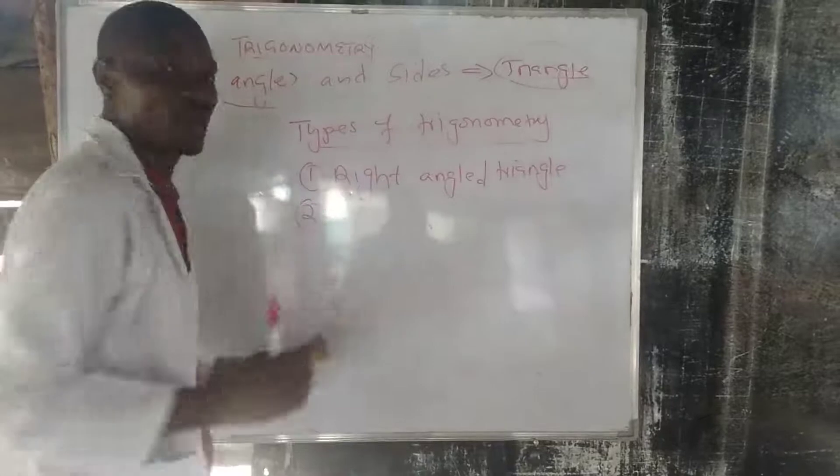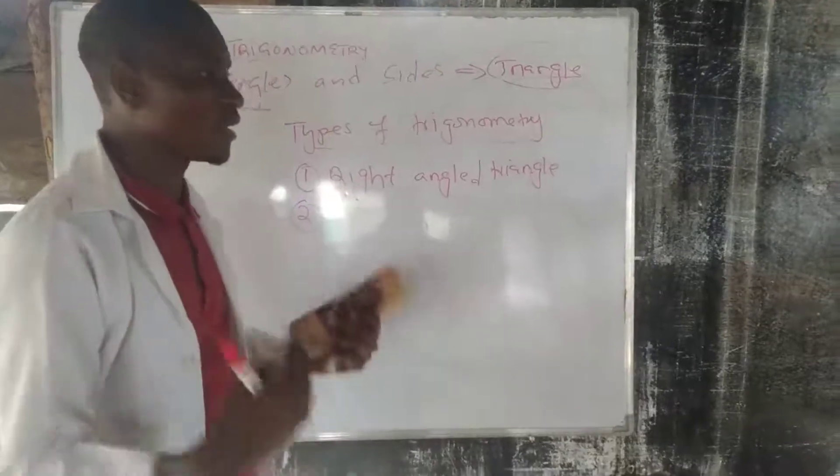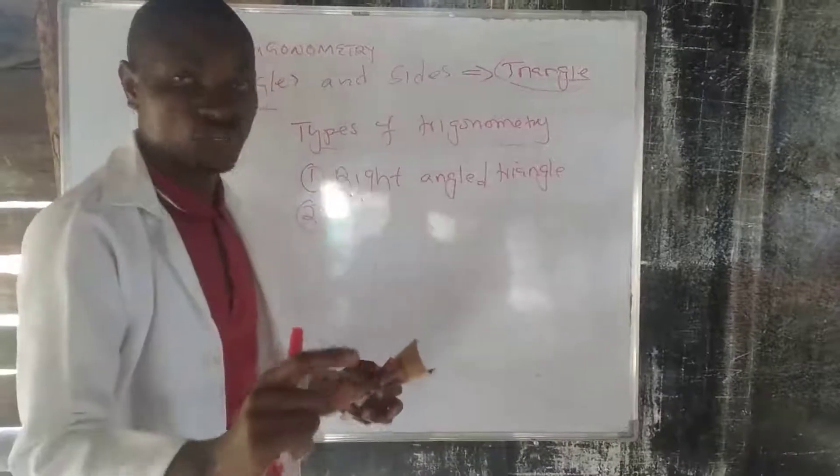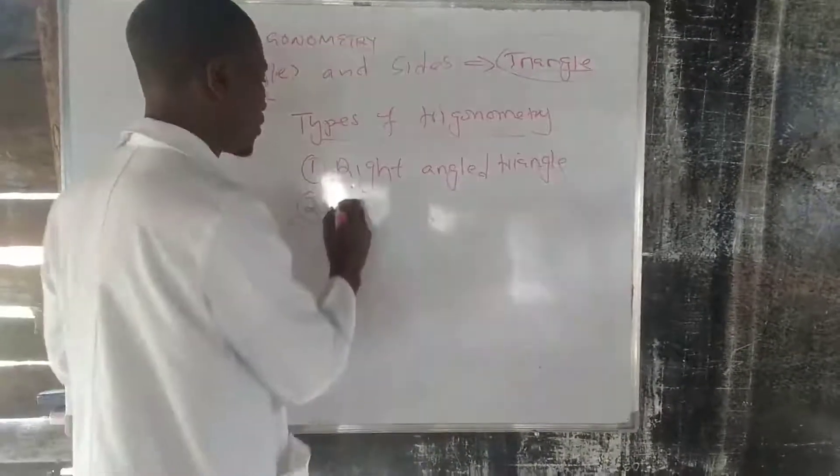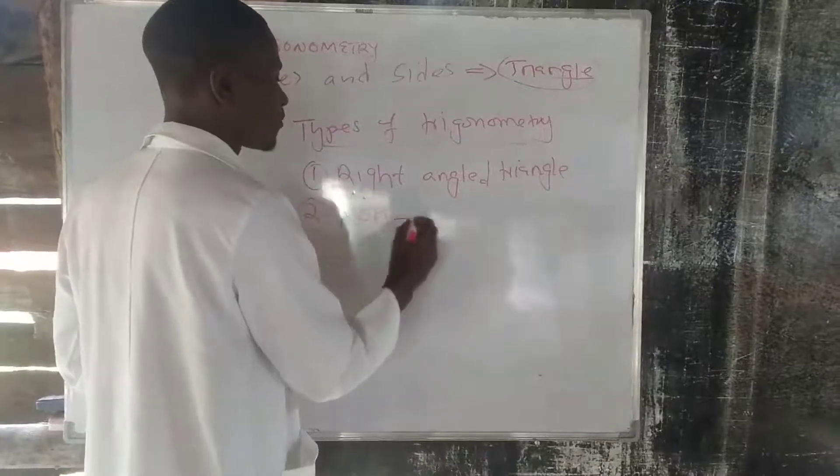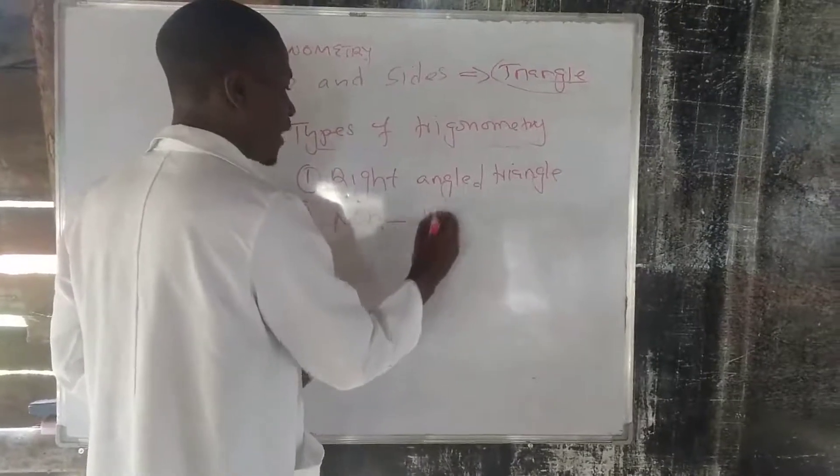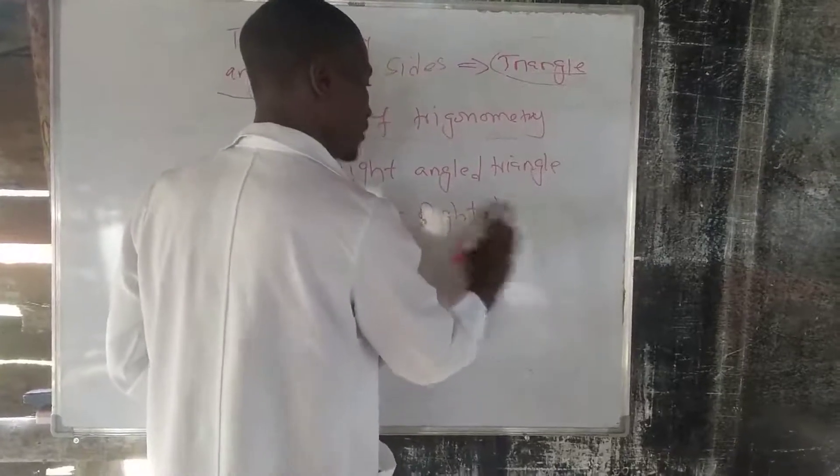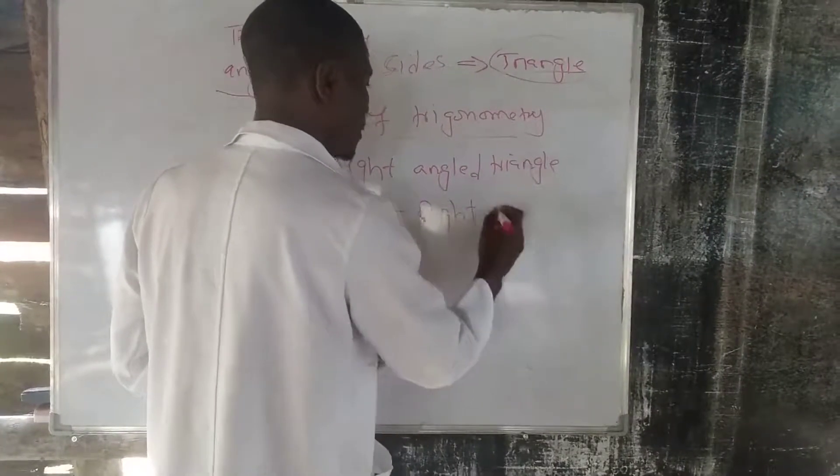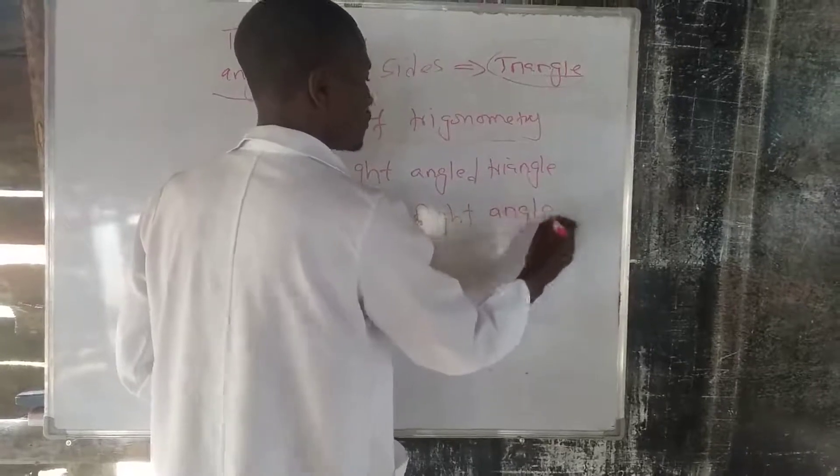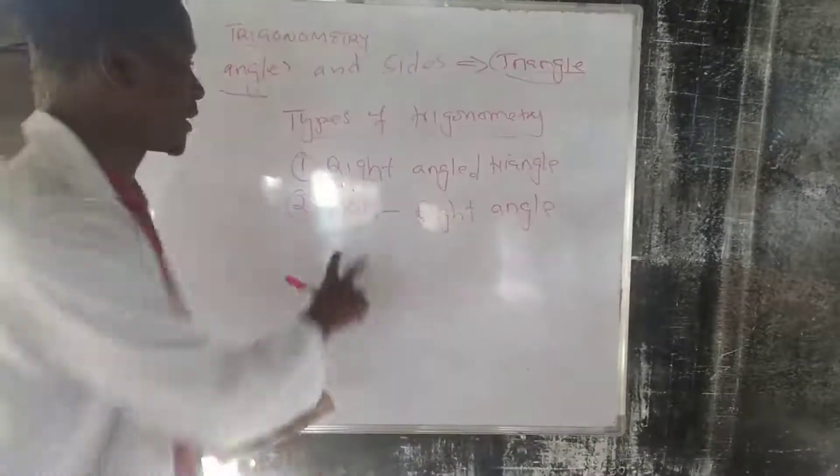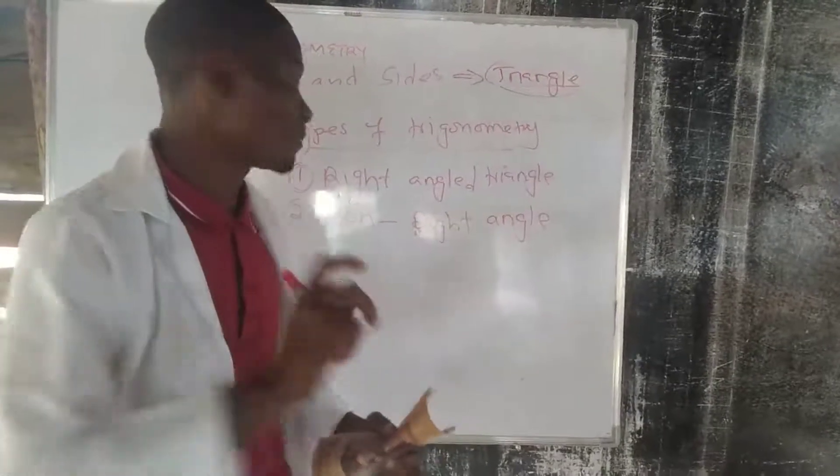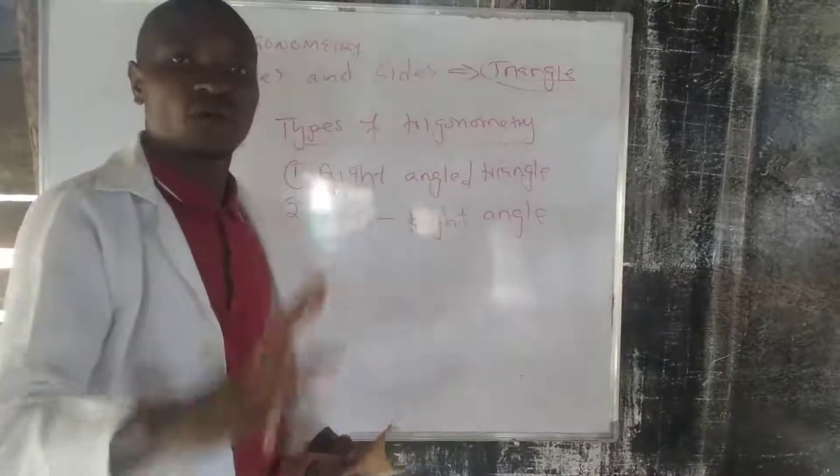And then, also, there are circumstances or situations where you are dealing with a triangle which is not a right-angled triangle, but a non-right-angled triangle. So, this means that you can also have a challenge or a question about trigonometry where a triangle that you're dealing with is not a right-angled triangle.